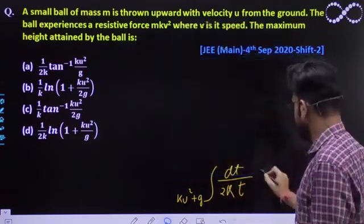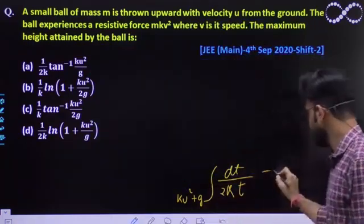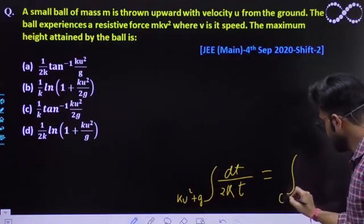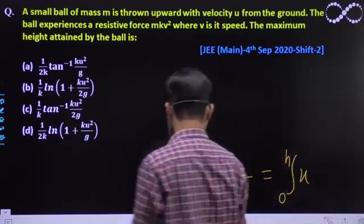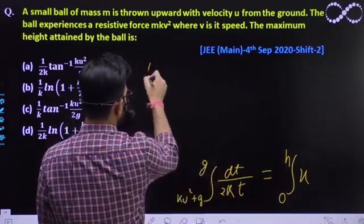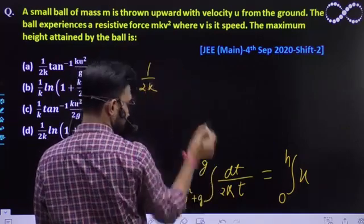You have to solve this. Since the value of x was from zero to h, x has become h here. We'll solve further. The value here was g. Quickly solving, taking 1 by 2k outside.